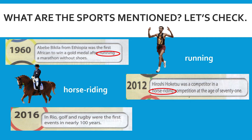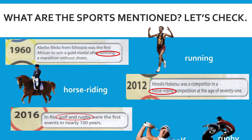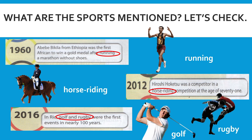Next, in Rio, golf and rugby were the first events in nearly 100 years. There were two sports mentioned: golf and rugby. So, did you manage to get all the answers correct? If so, well done.